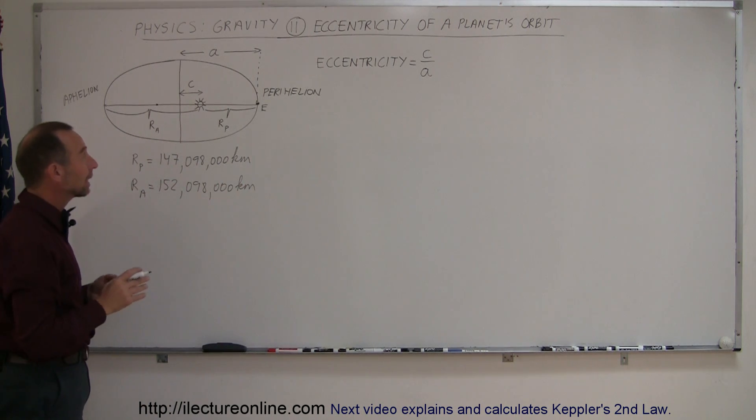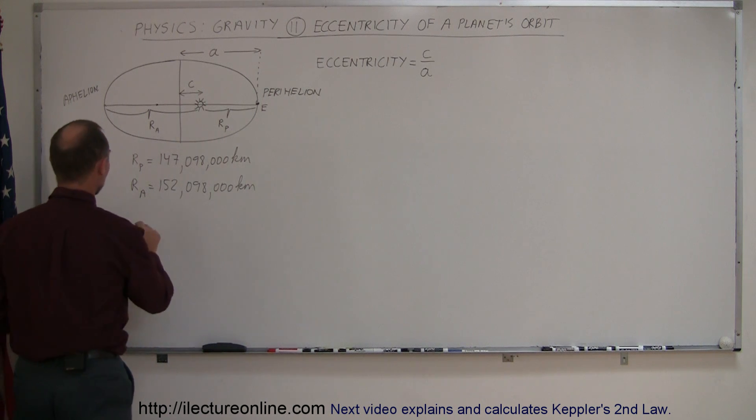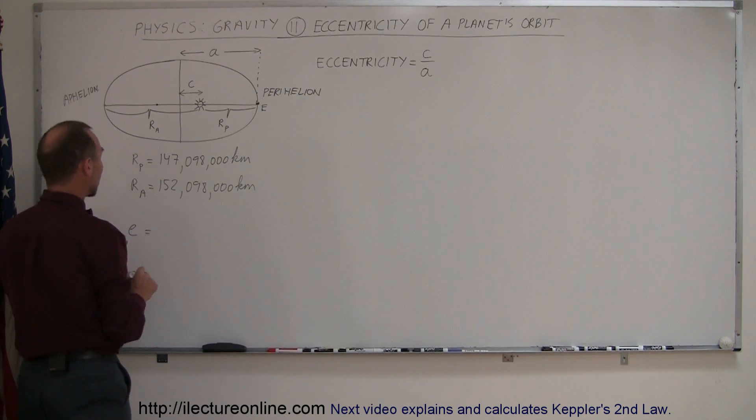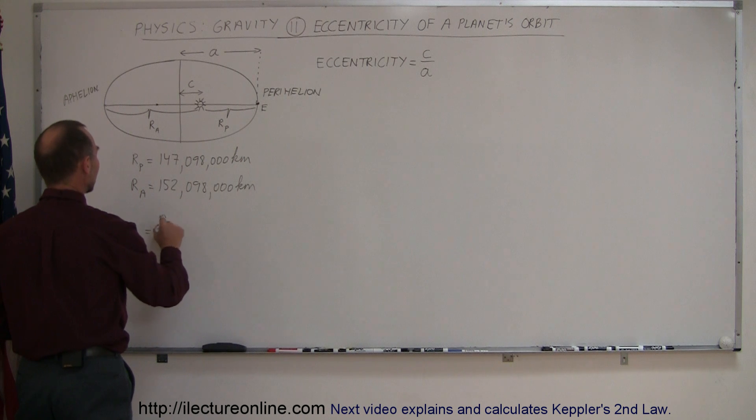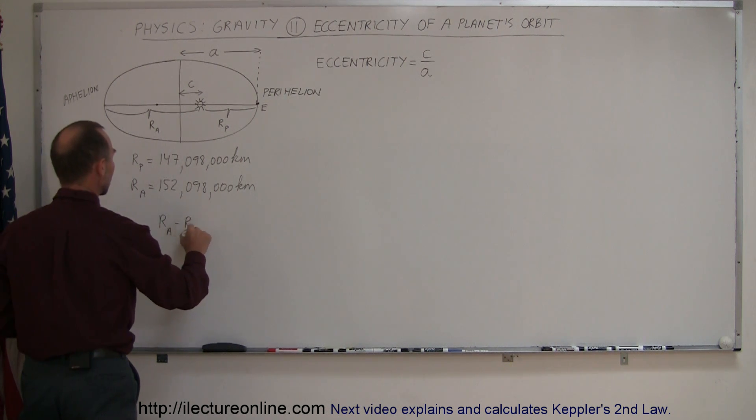Another way of calculating the eccentricity is as follows. We could say that the eccentricity, using a small letter e for that, is equal to the difference between the two radii, R sub A minus R sub P, divided by R sub A plus R sub P.